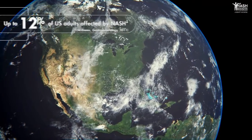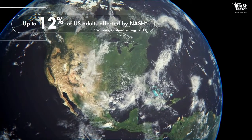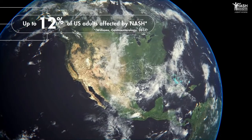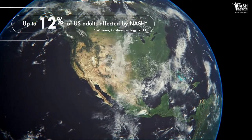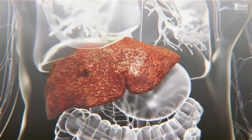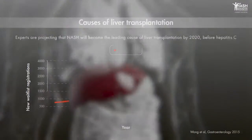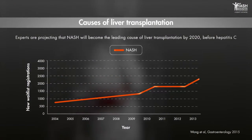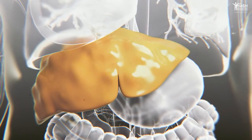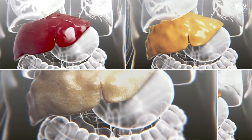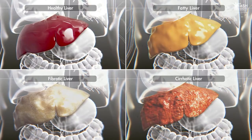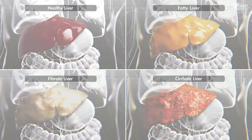A significant proportion of adults are affected by NASH globally, in association with the rising prevalence of diabetes and obesity. By 2020, it is predicted that NASH will become the leading cause of liver transplantation. In the face of this growing silent epidemic, there is an urgent need to develop innovative treatments that can target the many different aspects of NASH pathology.